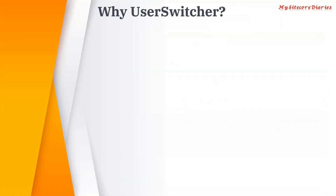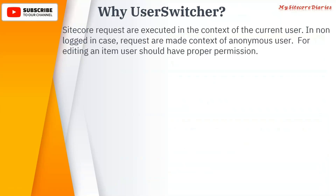We have seen that security contacts — you can use the user switcher and the security switcher. Sitecore recommends using the user switcher, and we are going to see why here. Sitecore requests are executed in the context of the current user. In non-logged-in cases, the requests are made in the context of the anonymous user — if there is no login, it will be anonymous user.